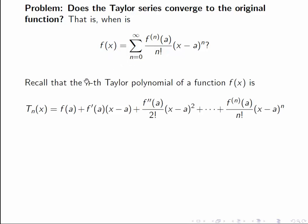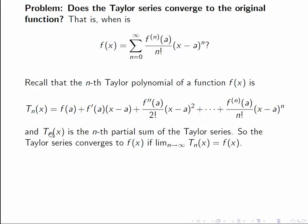Recall that the nth Taylor polynomial of a function is given by this formula here. Notice that T_n of x is the nth partial sum of the Taylor series. So if this series converges, it converges to the limit as n tends to infinity of T_n of x. So we're interested in the question of when is this limit equal to f of x.